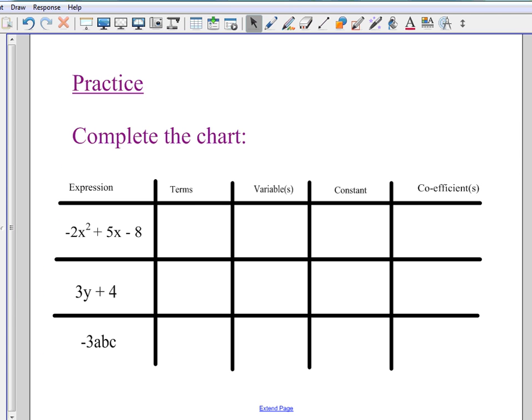Now this last slide is just a chart that you have to complete. And again, I want you to try it yourself and then pause the video and restart it and check if you're right. So in this one, the first one, we have negative 2x squared plus 5x and negative 8. So there are three terms. The variables are x squared and x. The constant is negative 8. And the coefficients are negative 2 and 5.